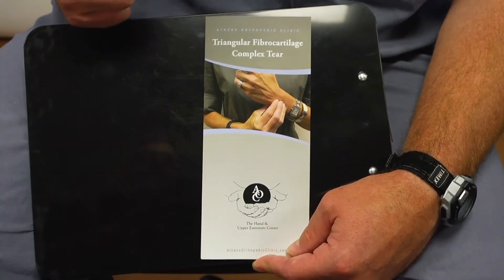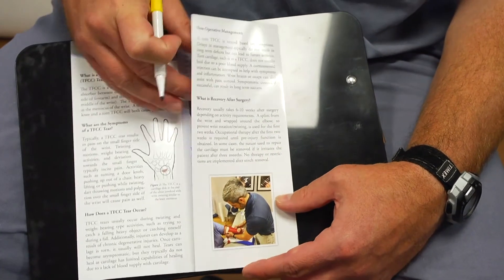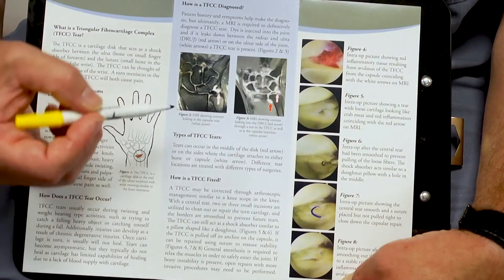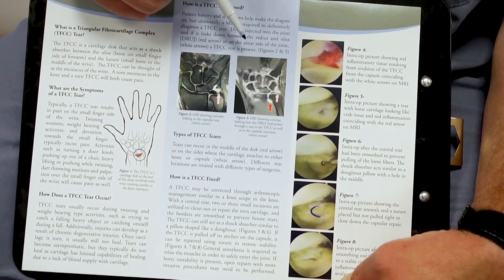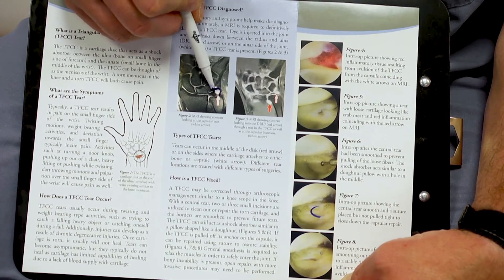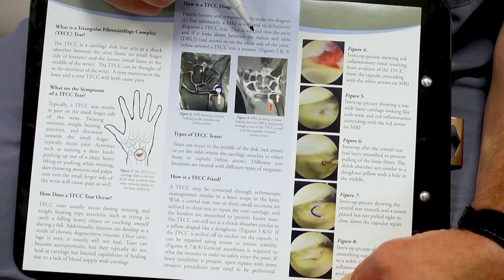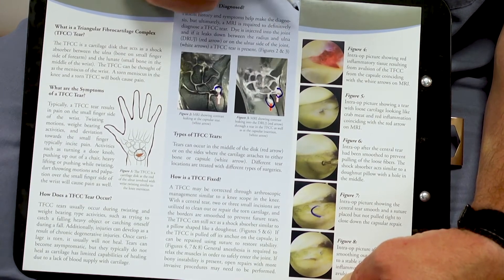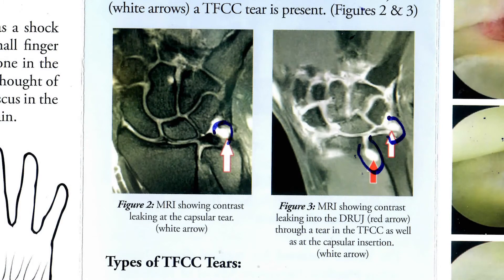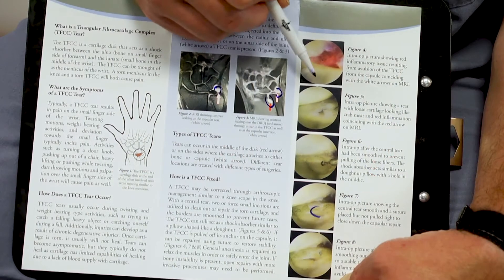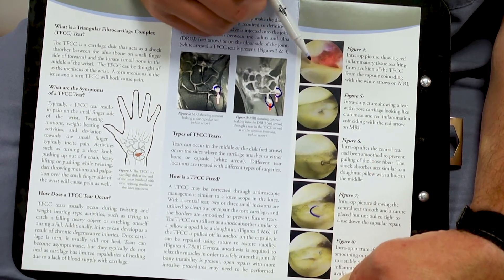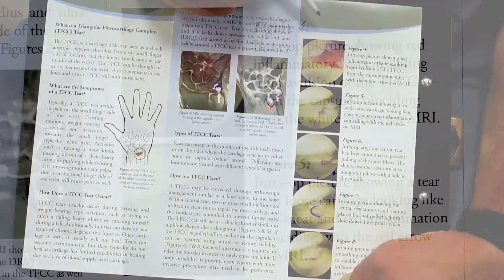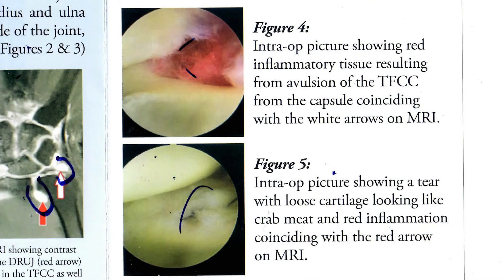This is a brochure that we've made for TFCC tears. Like we talked about in the previous two MRIs, a tear right here on the ulnar aspect off the capsule, and here you can see one leaking into the DRUJ as well as the ulnar side right here. Once we decide to proceed with surgery, we use a camera similar to a meniscus repair in the knee. This is the ulnar-sided tear — you can see all the inflammation associated with the tear in this area.